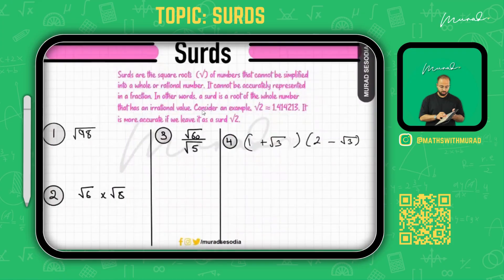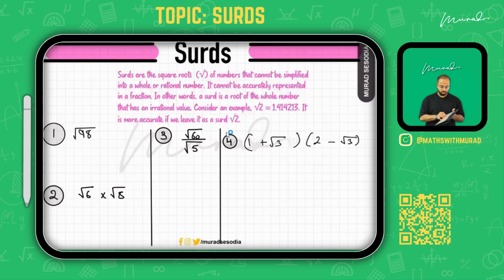In today's class, we are going to complete the whole topic of surds. Surds are the square roots of numbers that cannot be simplified into a whole or rational number — they cannot be accurately represented as a fraction. In other words, a surd is the root of a whole number that has an irrational value. For example, the square root of two is an irrational number.